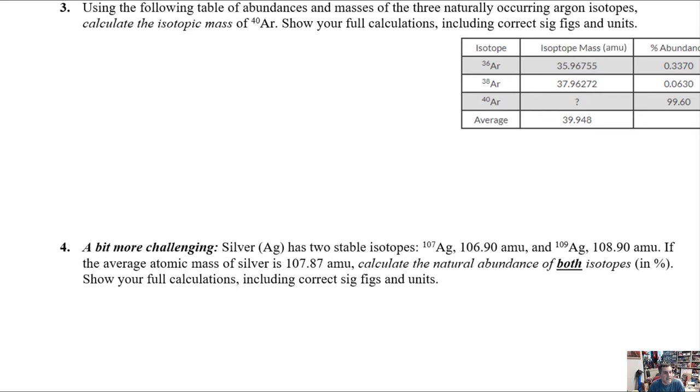Now this next question kind of takes the same formula, but in this case, I'm going to go ahead and give you the average atomic mass here, and instead I'm going to make you go and calculate an unknown that happens to be one of the masses of the individual isotopes. And so this is really the same thing. It's just that your unknown is going to be something different than it was before.